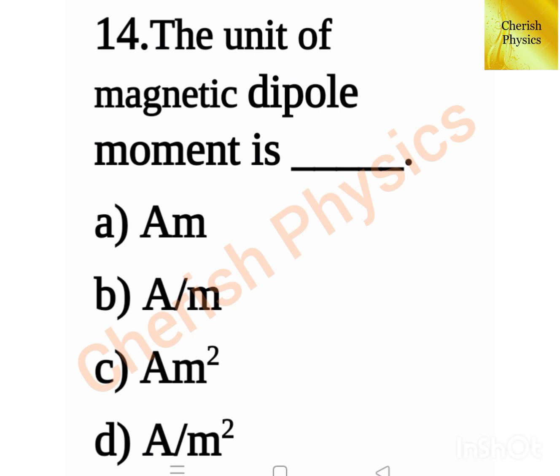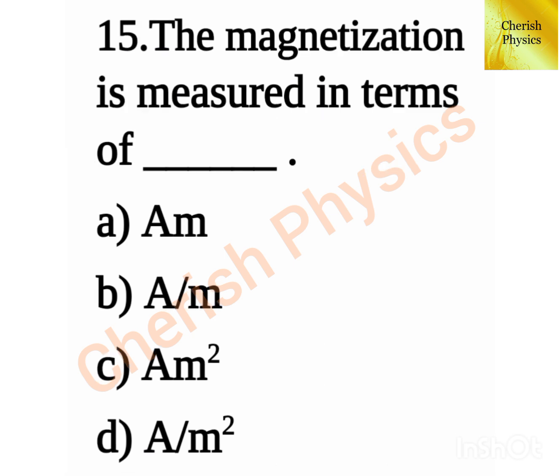The unit of magnetic dipole moment is dash. Magnetization is measured in terms of dash.